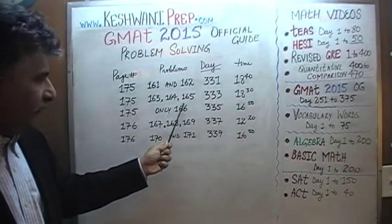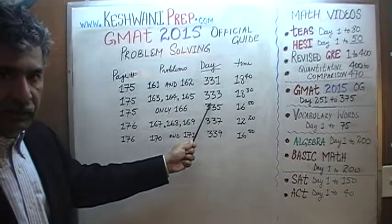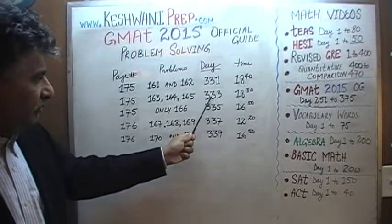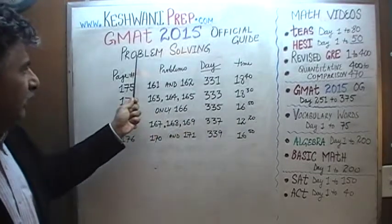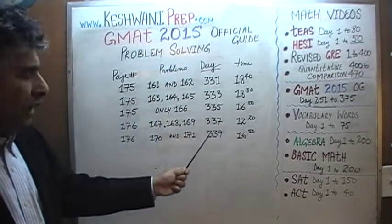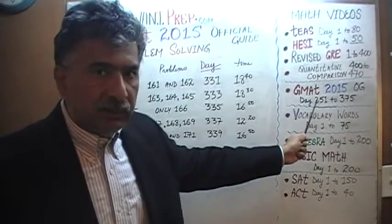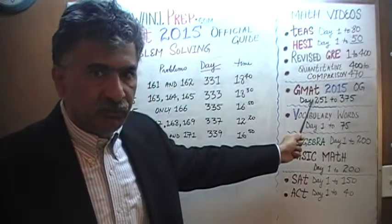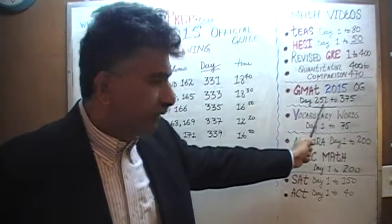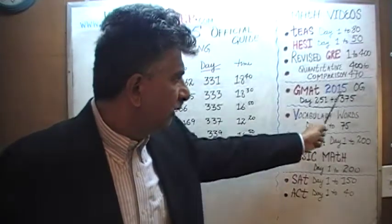Problems 164 and 165 on the next day, Day 133. The reason I say next day is because solutions to all the problem solving questions are presented on odd days, and solutions to all the data sufficiency questions are presented on even days. Beginning with Day 252, you will find the solutions to all the problems from Day 251 through 375.